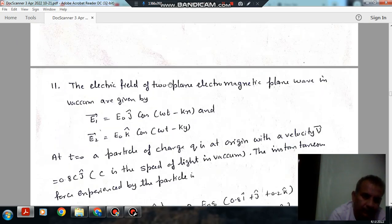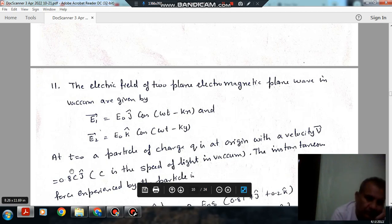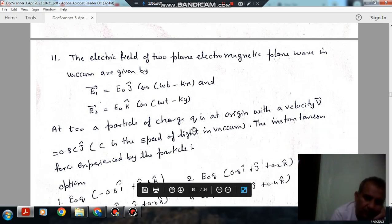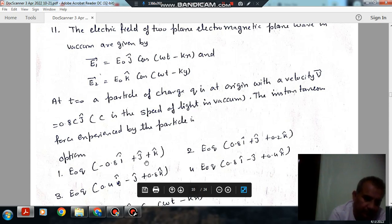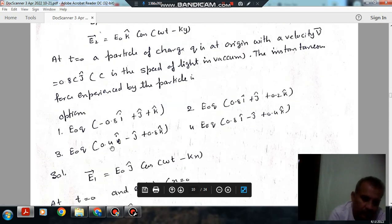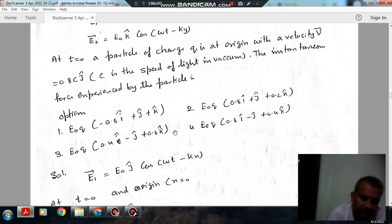The electric field of two plane electromagnetic waves in vacuum are given by E1 equals E0 j cap cos(omega t minus kx) and E2 equals E0 k cap cos(omega t minus ky). At t equals 0, a particle of charge q is at origin with velocity v equals 0.8c jk, where c is the speed of light. Find the instantaneous force experienced by the particle. Options are: Option 1: E0 q bracket minus 0.8i plus j plus k. Option 2: E0 q (0.8i cap plus j cap plus 0.2k cap). Option 3: E0 q (0.4i cap minus j cap plus 0.8k cap).